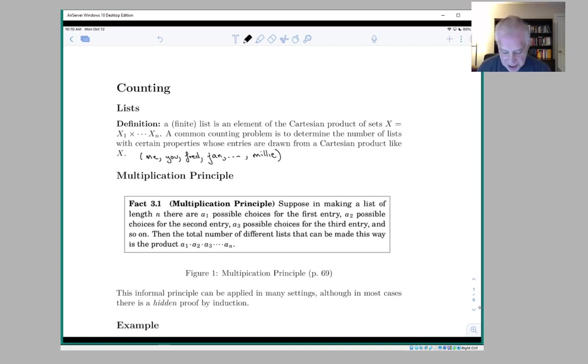And a list like this, what's important is that the order matters, and that each entry is chosen from some particular set. So for example, here, each entry might be chosen from the set of people or from the set of names. And so we can think of this as an ordered tuple, or as an element of a Cartesian product of the sets that we're interested in.